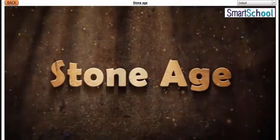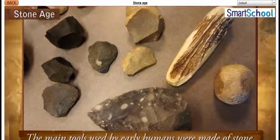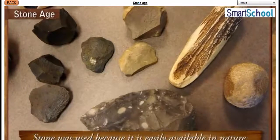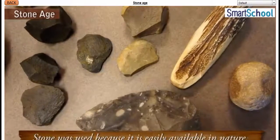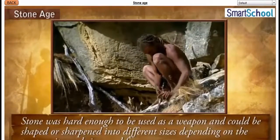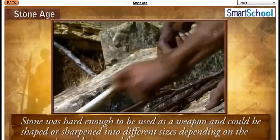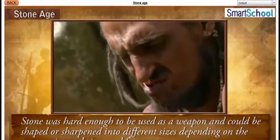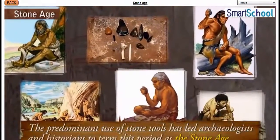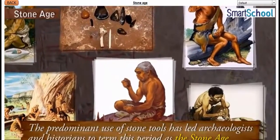Stone Age. The main tools used by early humans were made of stone. Stone was used because it is easily available in nature. Stone was hard enough to be used as a weapon and could be shaped or sharpened into different sizes depending on the purpose it was being used for. The predominant use of stone tools has led archaeologists and historians to term this period as the Stone Age.